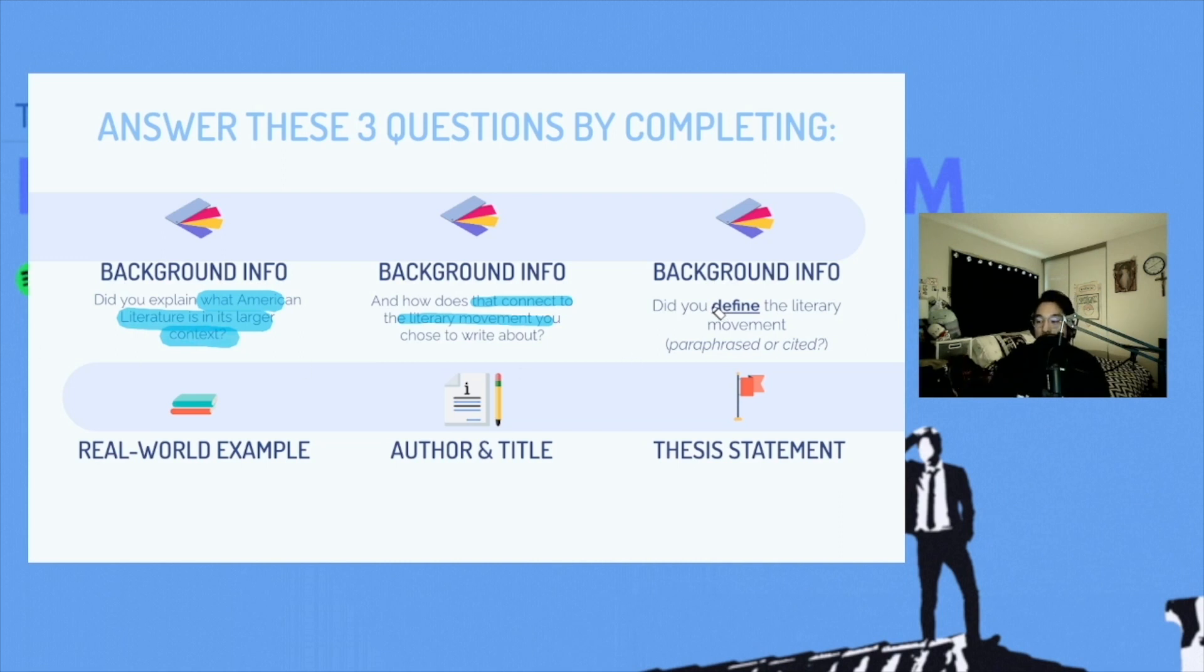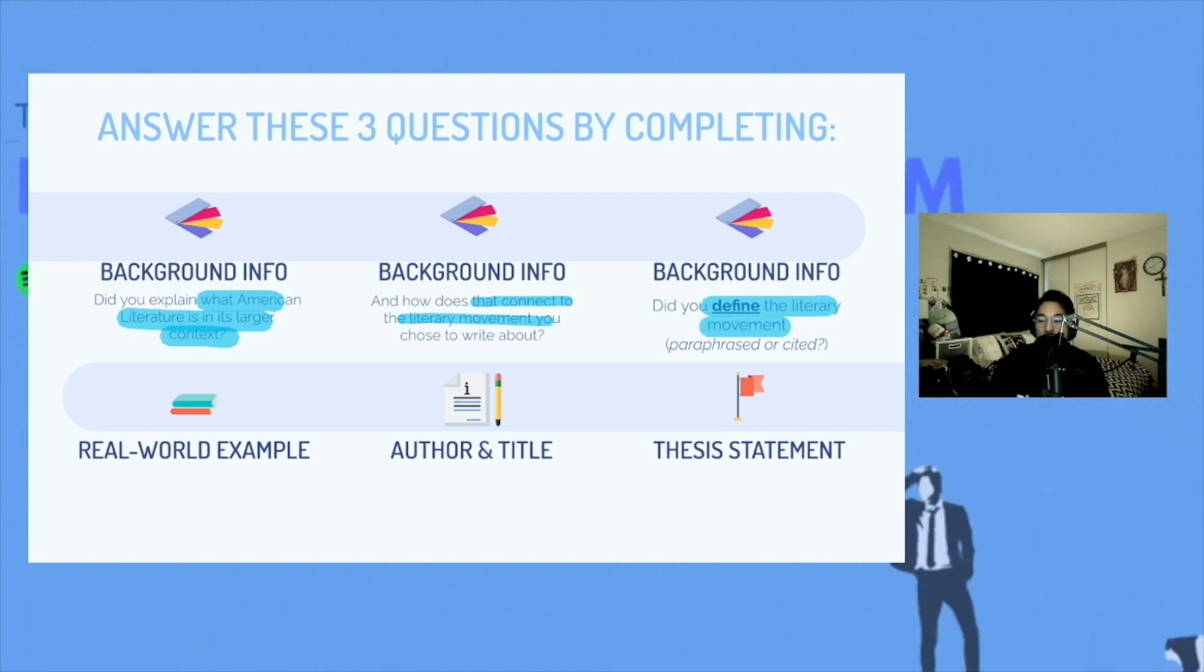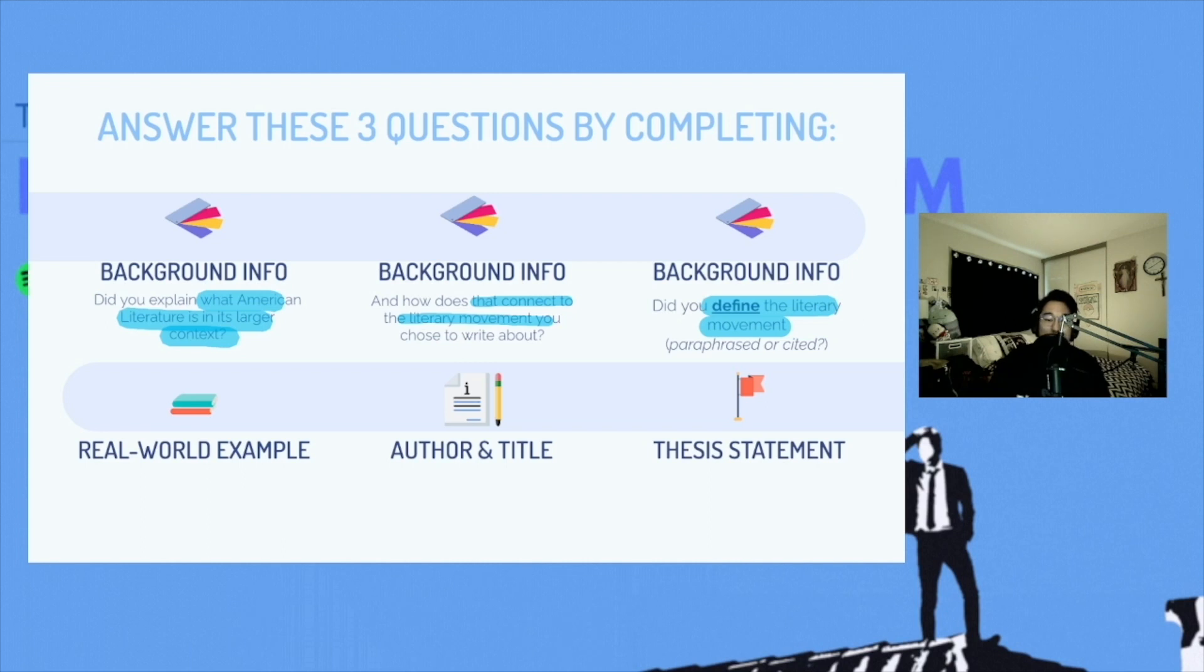And then lastly, as you've narrowed it down, transition over to defining that literary movement, whether it's paraphrased or cited. You want to make sure that your reader understands what this historical movement is that you're talking about as it is centuries old.